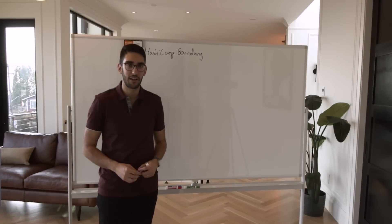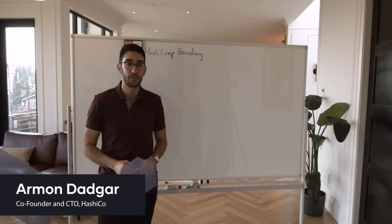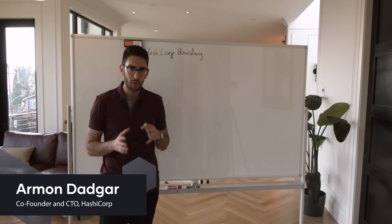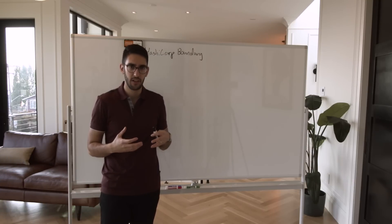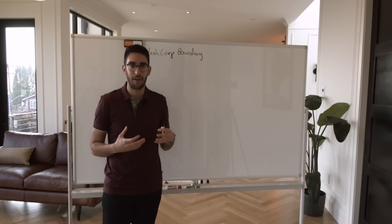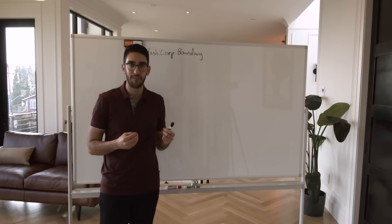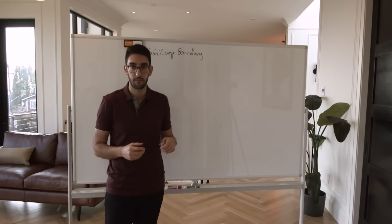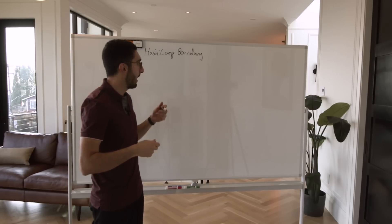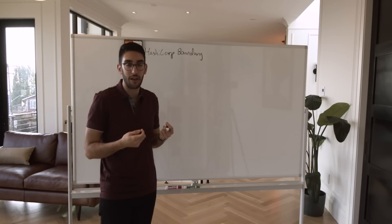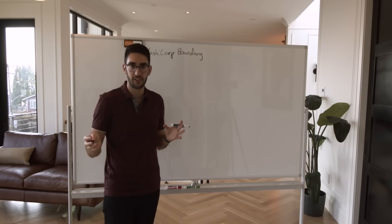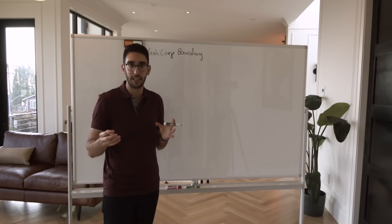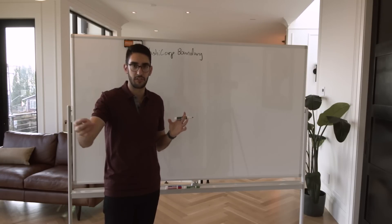I want to spend a little bit of time today talking about HashiCorp Boundary. But before we get right into what the product is and how it works, I want to set a little bit of context about how we access private resources. So when we talk traditionally about how we would access a private resource, let's say a database on a private network, there's a handful of different systems that are typically in between the user and the target system.